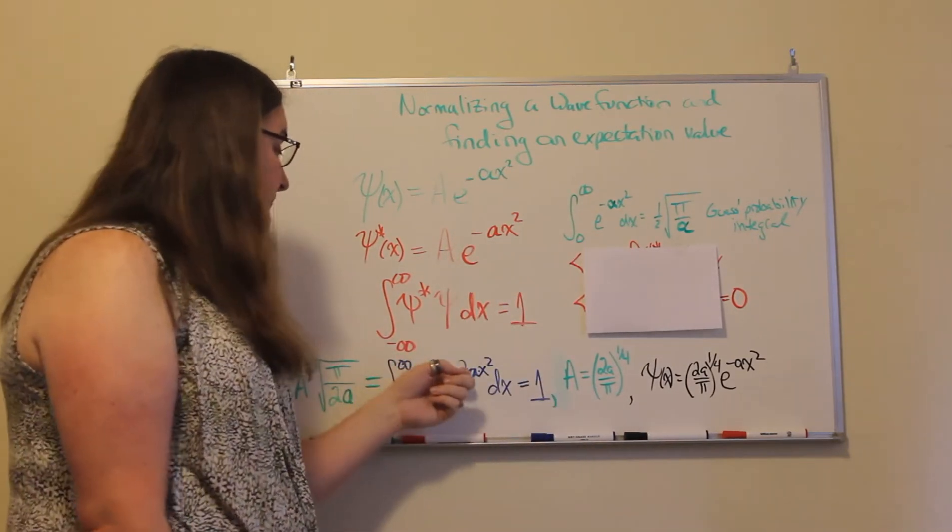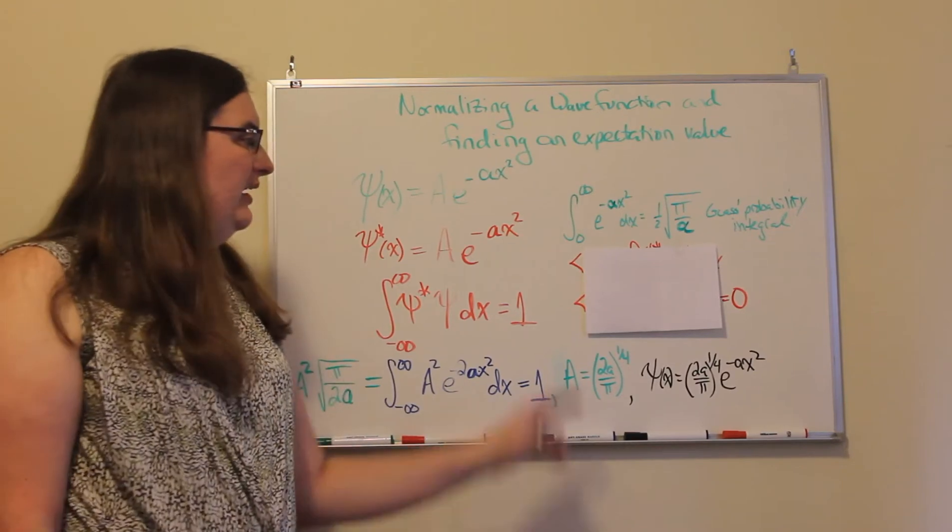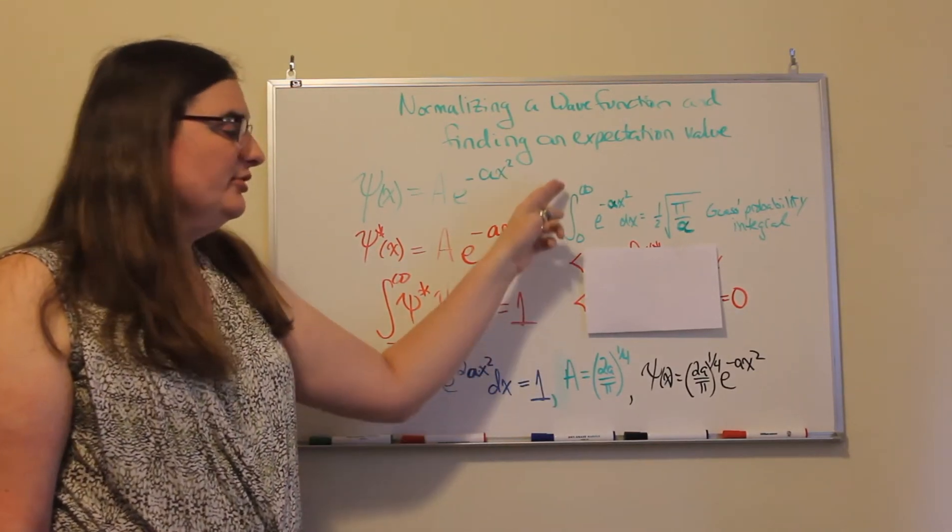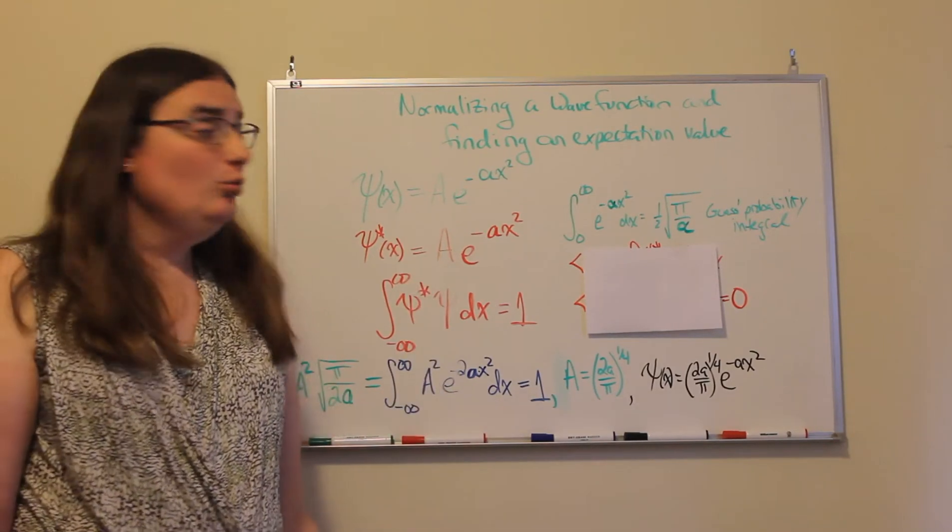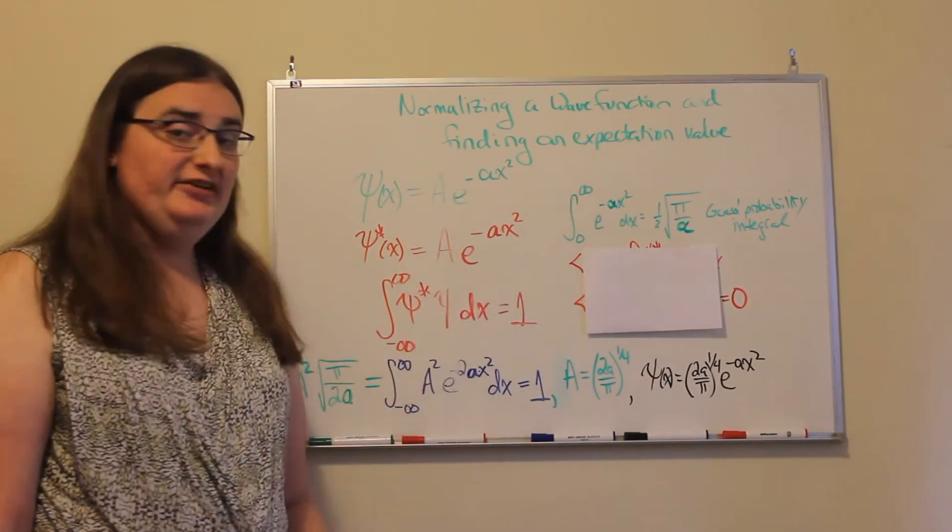So here, our constant alpha is 2a. And you might say, well, this is zero to infinity, but this is minus infinity to infinity. Well, for this integral...